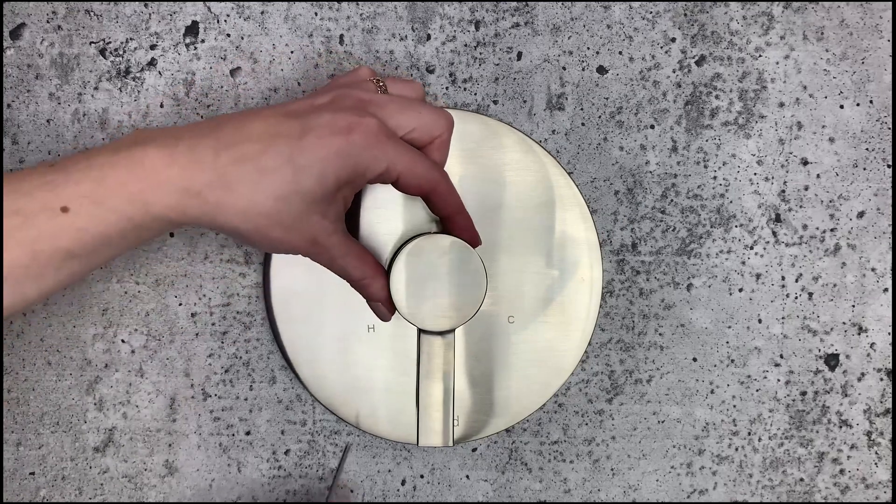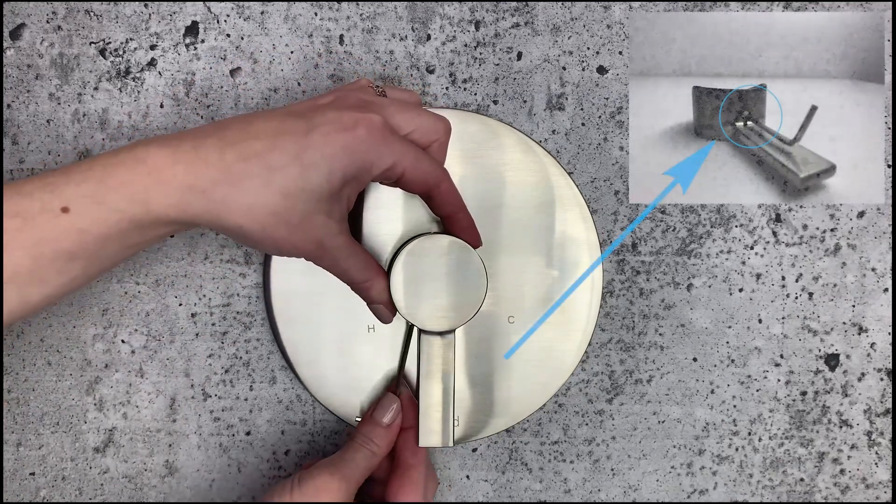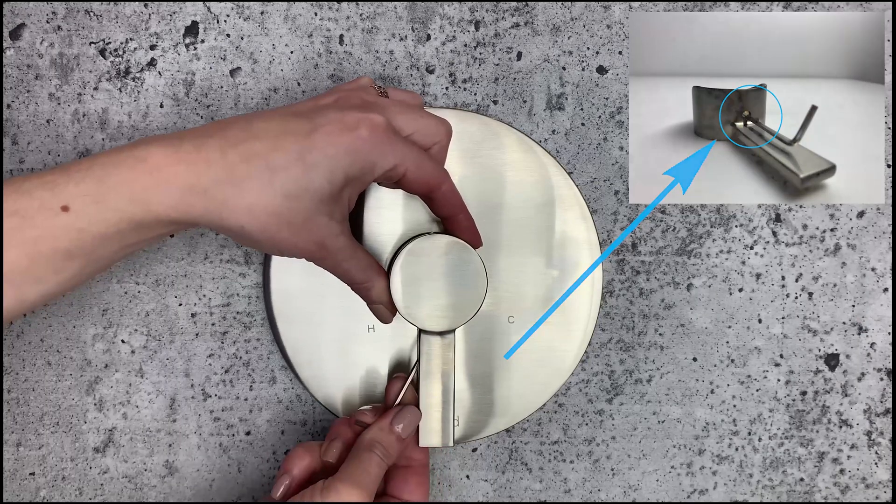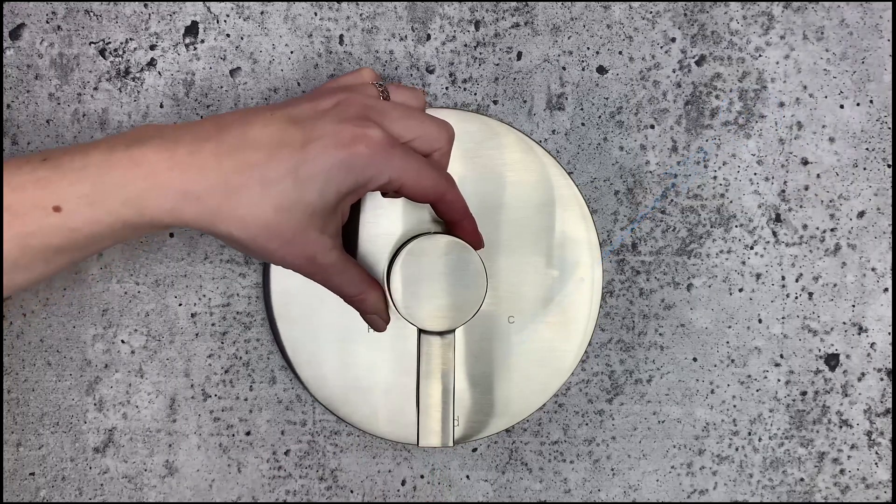Next, you'll need to loosen the set screw that's holding the handle in place. Use the allen key that was included with your trim kit and turn in a counter-clockwise direction.